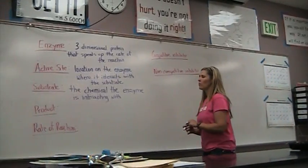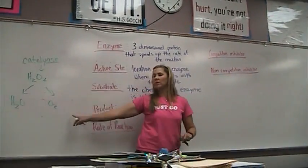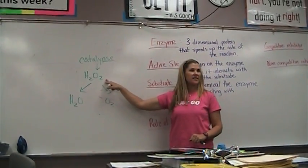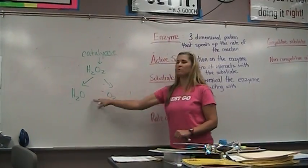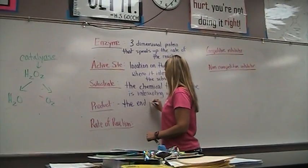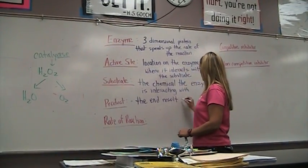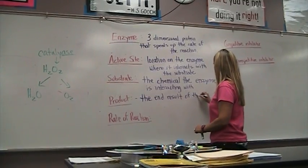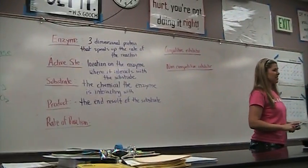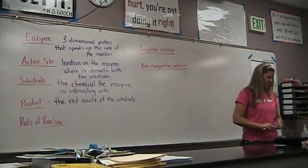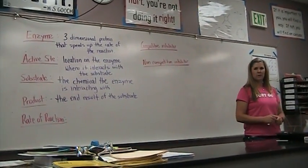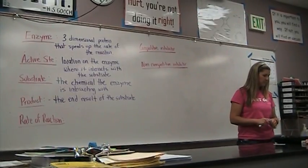The product — what were the products of the catalase lab? Water and oxygen. So if the enzyme is going to break the substrate down, it ended up with two different products. The product is the chemicals that result from the enzyme breaking down the substrate — after the reaction.